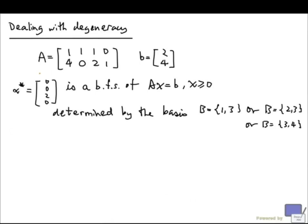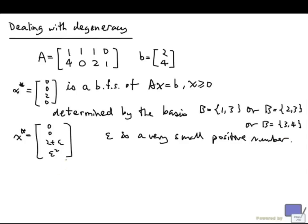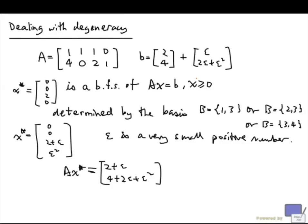So how do we do that? In this example, we'll try to change the right-hand side so that the basic feasible solution we're dealing with is 2 plus epsilon and epsilon squared, where epsilon is a very small positive number. And if that's the case, then the basis that determines x star is uniquely determined. Now how much do we need to perturb b? If this is my solution, then Ax star better be 2 plus epsilon, and 4 plus 2 epsilon plus epsilon squared. So the perturbation needed is epsilon and 2 epsilon plus epsilon squared, which gives a perturbed system.